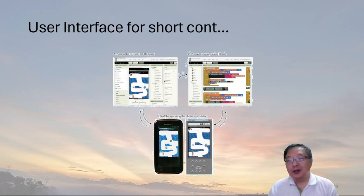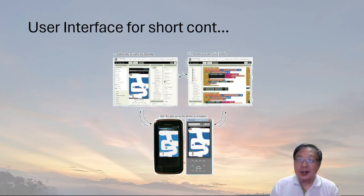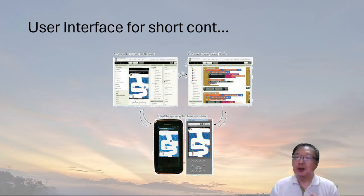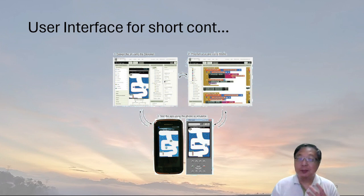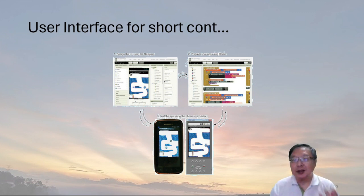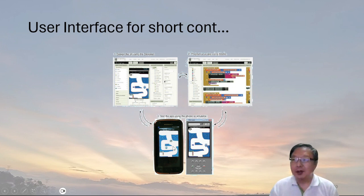In App Inventor, you design the user interface first and then write the computer program. This is an example of a top-down approach. Another way in other programs is to start with the nuts and bolts of the program and worry about the user interface later — that's the bottom-up approach. Both approaches have advantages and disadvantages. In practice, you'll probably find yourself doing a little bit of each, flipping backwards and forwards between designing the user interface in the designer, programming your app using blocks, and then testing it on the phone or emulator.